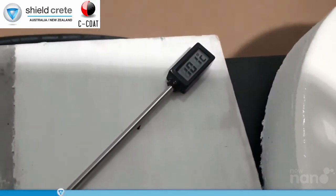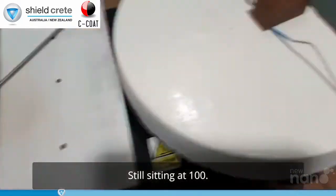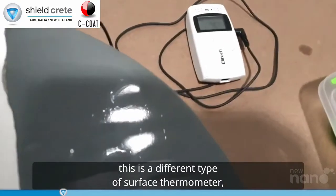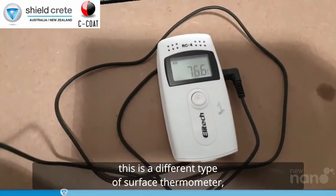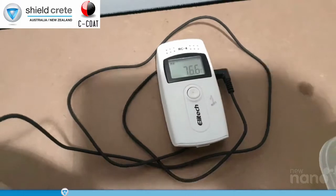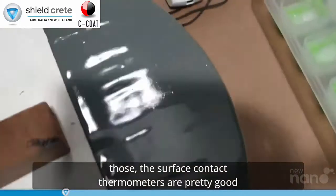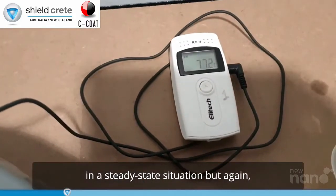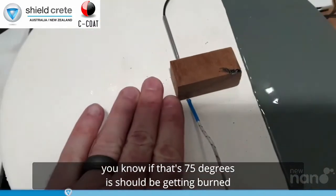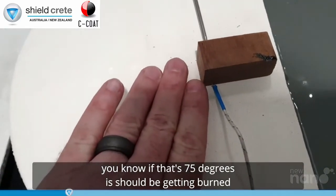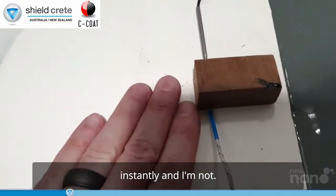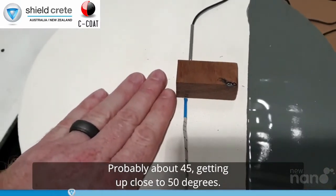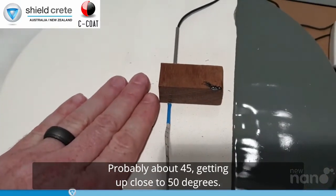Still sitting at 100. Now the interesting thing about these, this here is a different type of surface thermometer. It's reading 76. So the surface contact thermometers are pretty good in a steady state situation. But again, if that's 75 degrees, I should be getting burnt instantly. And I'm not. It just feels nice and warm. Probably about 45, getting up close to 50 degrees.